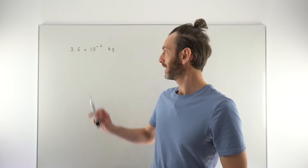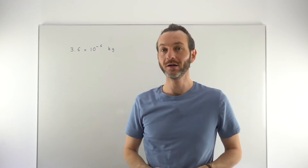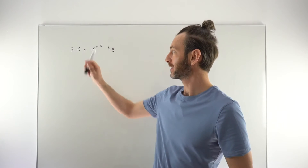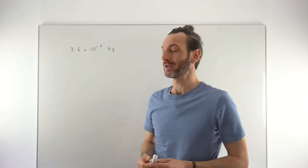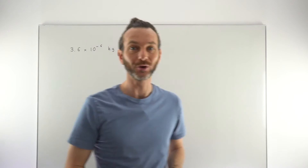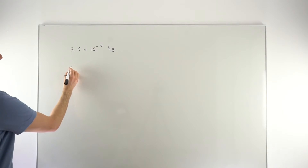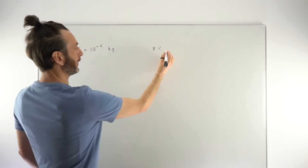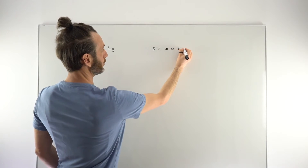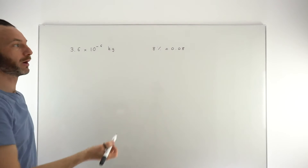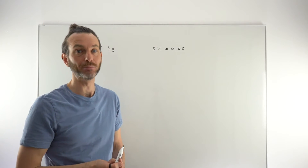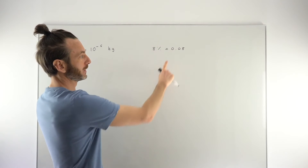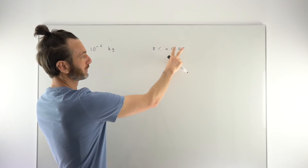In this question we've been given the weight of a sesame seed — a very small number written in scientific notation — and we're asked to calculate the weight of a poppy seed, which is apparently 8% of the weight of the sesame seed. All we're trying to do is take 8% of this number. This is a calculator question. Remember that 8% as a decimal is 0.08 — that's our multiplier. If you multiply something by 0.08 you're taking 8% of it; if you multiply by 1.08 you're adding 8% on.